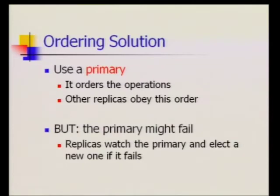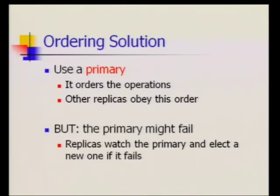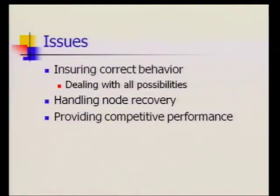However, there's a fly in the ointment: the primary might fail, so you need an answer for this. The other replicas watch the primary, and when they suspect it's failed — notice they can't be sure, because the absence of a message on the network never tells you for sure what's going on at the other end — they run a protocol to elect a new primary. That primary picks up from the old one and continues. We also have to ensure that when the new primary picks up, it knows all the operations the old primary had ordered, and handle all possibilities including node recovery.